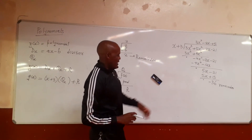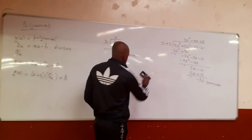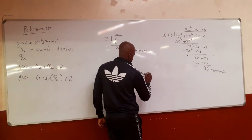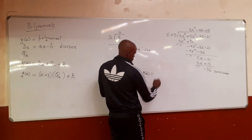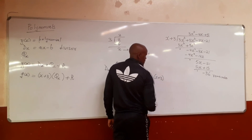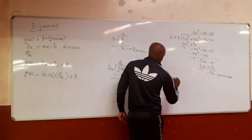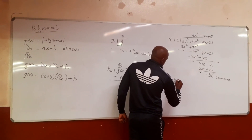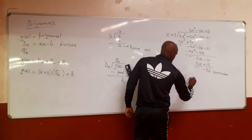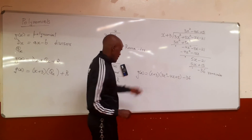Now let's go back and check that we can recover our polynomial. We said our polynomial g(x) equals the divisor (x plus 3) times the quotient (3x² minus 4x plus 5) plus the remainder (minus 36). Now we solve the brackets.